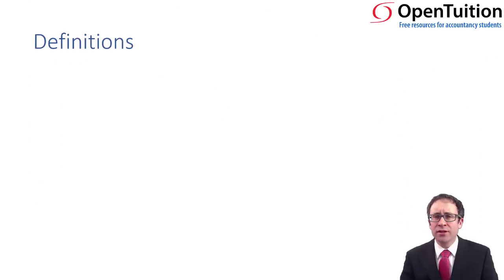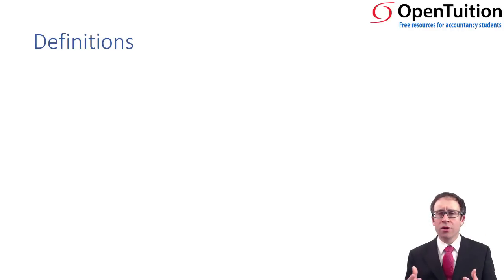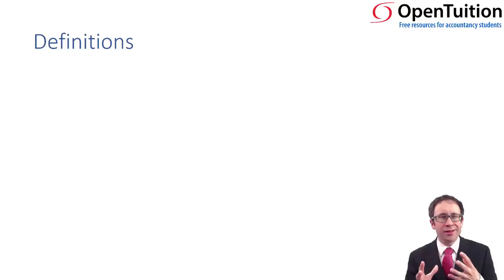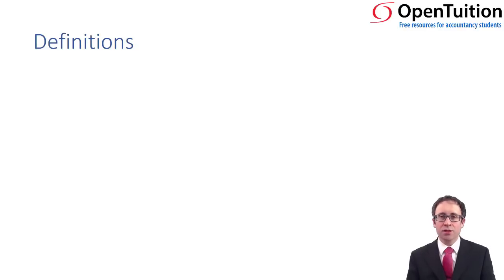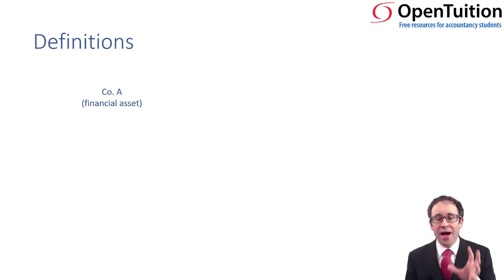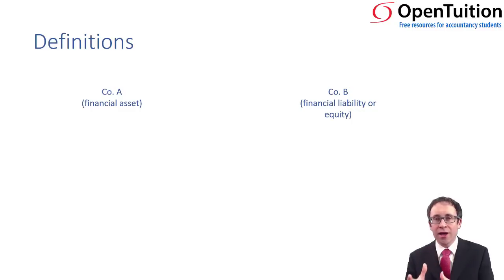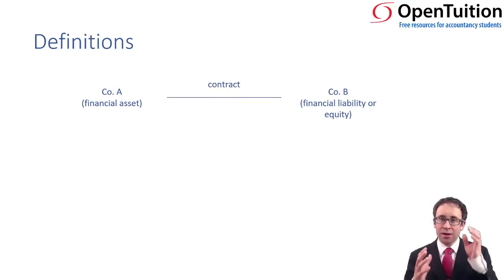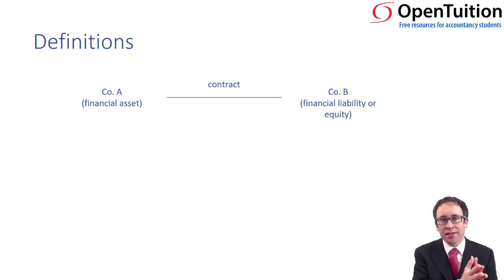I must have said the word financial instrument several times already, but we haven't actually introduced the concept of what a financial instrument is. Although the rules are detailed and quite complex, if you bring it back to the basics, that can help in some challenging circumstances. So in order for there to be a financial instrument, there has to be a financial asset in one set of books and a financial liability or equity within another set of books. And between those two parties, there is a contract that delivers the financial asset in one set of books and the financial liability or equity within the other.